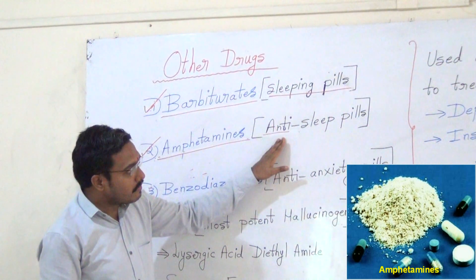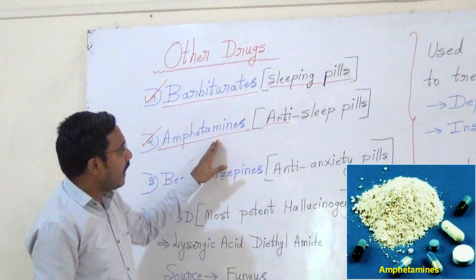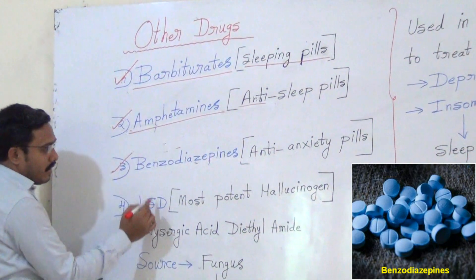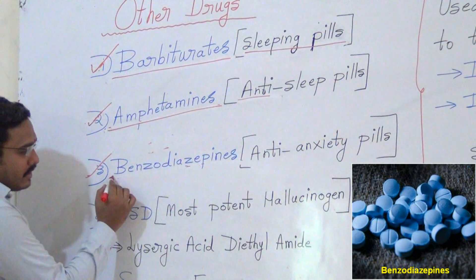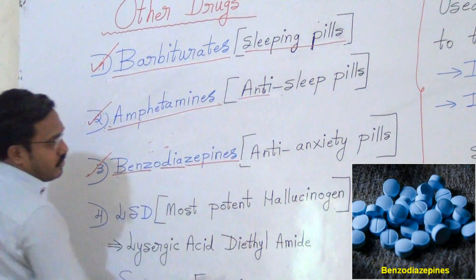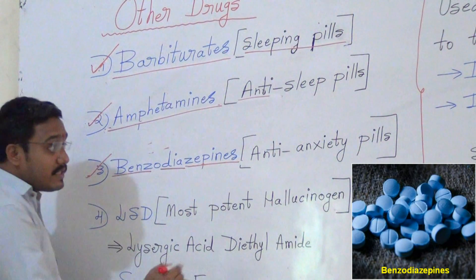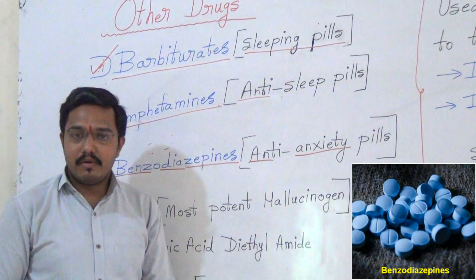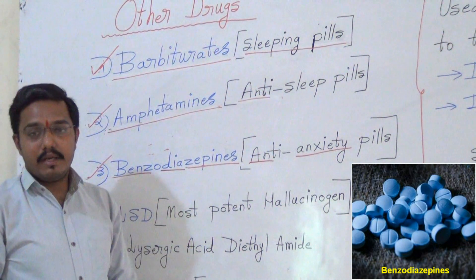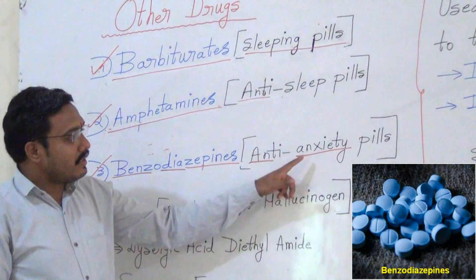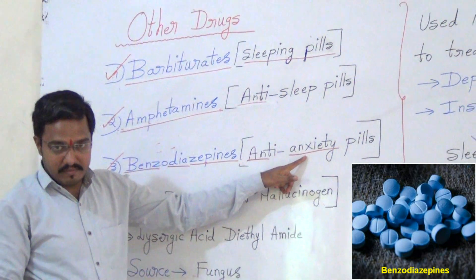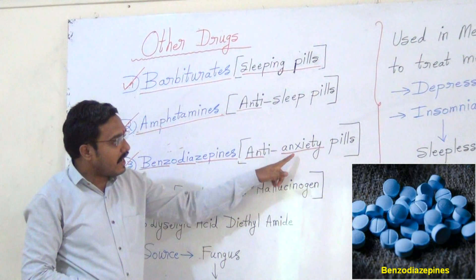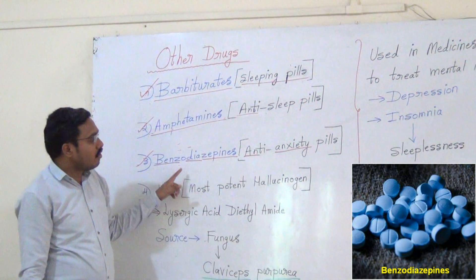The third one is benzodiazepines. These are anti-anxiety pills. People who have high anxiety — if they take this drug, these drugs reduce the anxiety. So anti-anxiety pills are benzodiazepines.